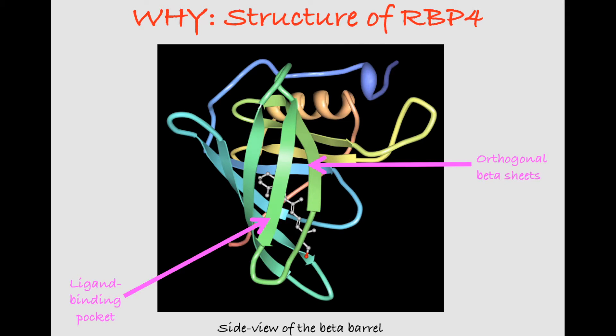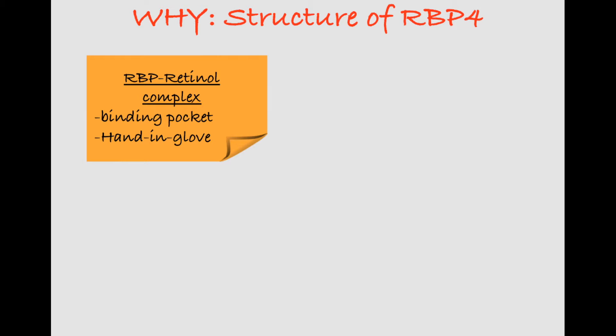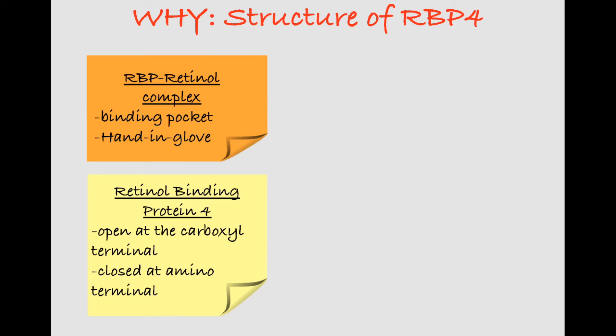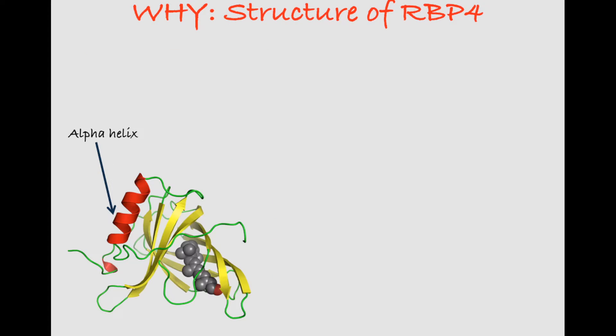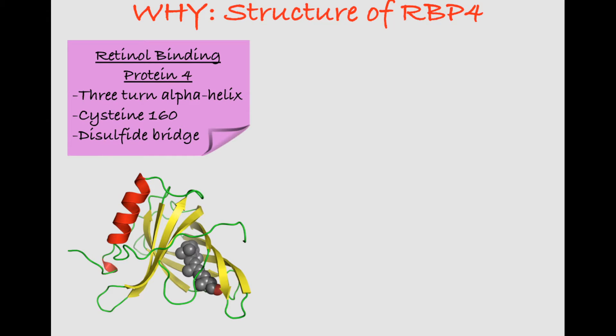This ligand binding pocket is often compared to a hand-in-glove model. This pocket is open at the C-terminal but is capped off at the N-terminal. This closed end is achieved through a salt link that's found between the lysine and the aspartate residues found on the beta sheets. In this general structure, RBP also includes a three-turn alpha helix. The alpha helix is generally found on the underside of the beta barrel, making side chain contacts between the residues.